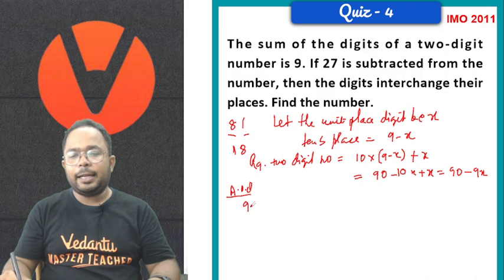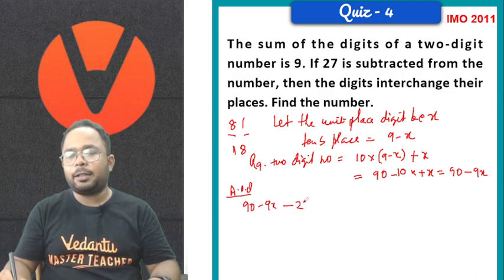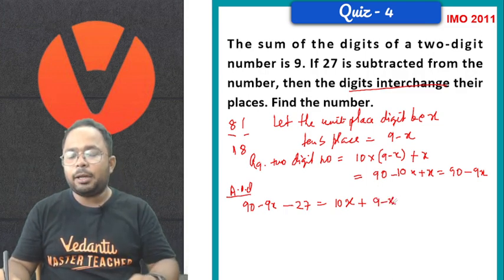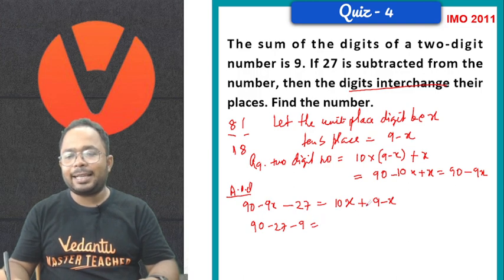Now, as per the question, if 90 minus 9x is subtracted with 27, the digits get interchanged. Means 10 into x plus 9 minus x. We can bring all the constants on one side. So, let's say 90 minus 27 minus 9 minus x. And on this side, 10x minus x is 9x. And that 9x goes on that side.